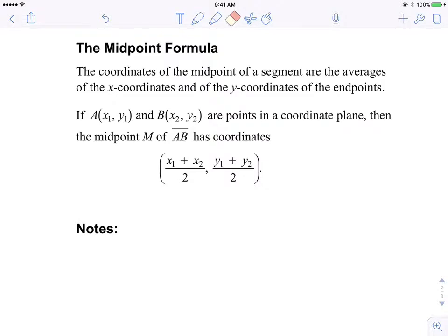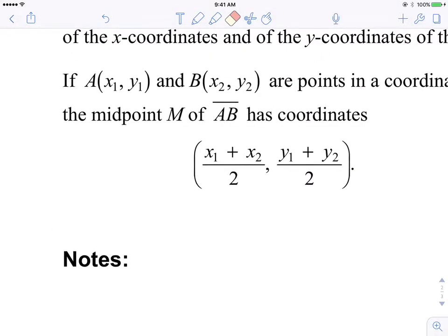So if point A and point B are the points in the coordinate plane, then the midpoint M of segment AB has these coordinates. So you sum the value of the X coordinates and divide by two. Then you sum the value of the Y coordinates and divide by two. That's how you find the coordinates of the midpoint. We discussed that. So that is the exact formula.